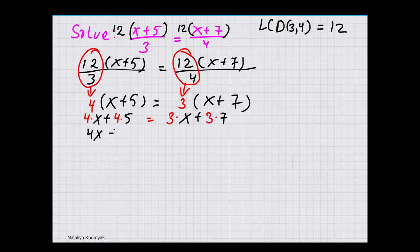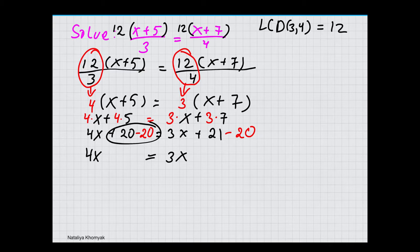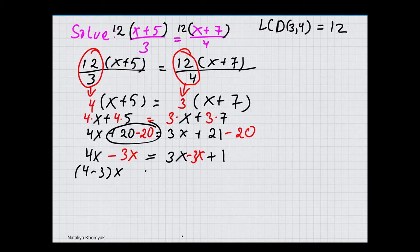We have 4x plus 20 equals 3x plus 21. Now that each side is simplified, we can solve for x. First thing I'm going to do is take away 20 from both sides. So now we have 4x equals 3x plus 1. Now we're going to take away 3x from both sides. We have (4 minus 3)x equals 1. 4 minus 3 is 1, so x equals 1. And this is our solution.